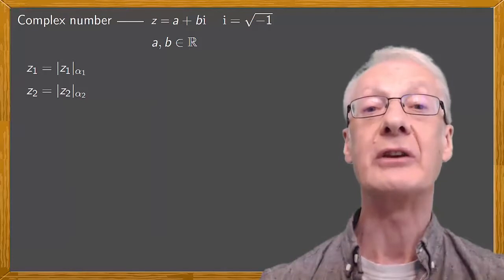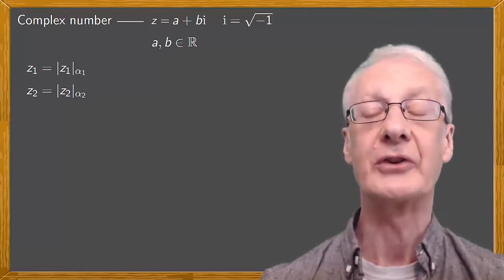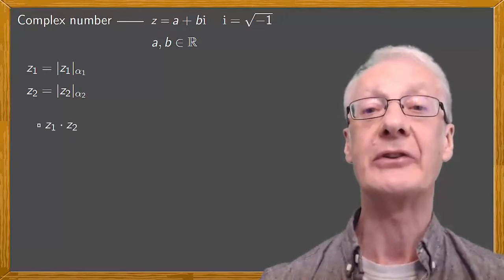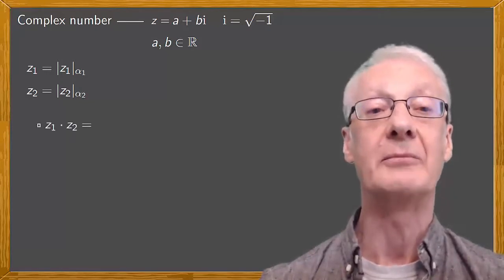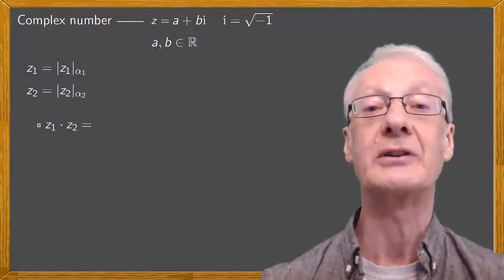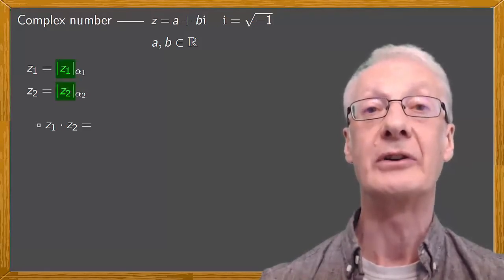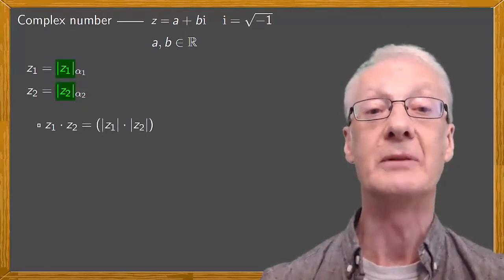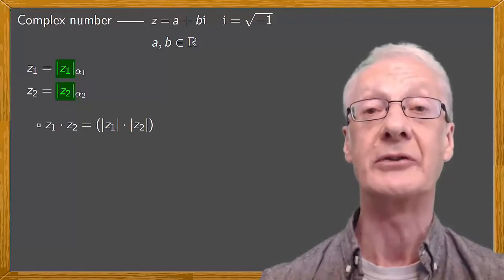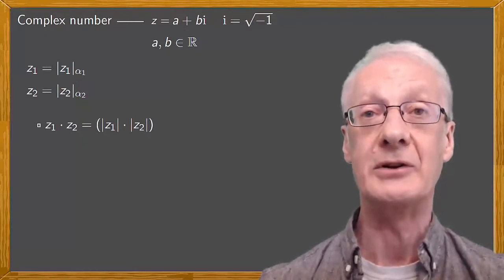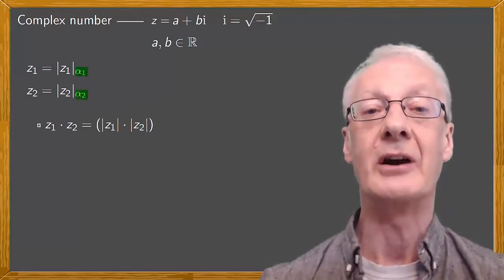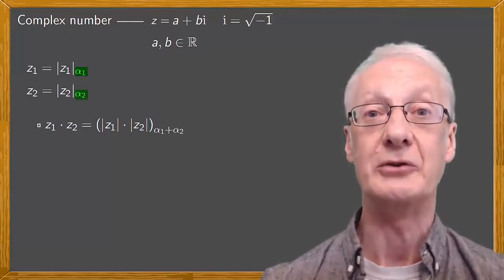If we then use the formulas for the sine and cosine of the sum of angles, we find that the product of z1 and z2 is the complex number with a modulus that's the product of the moduli of z1 and z2, and an argument that's the sum of the arguments alpha1 plus alpha2.